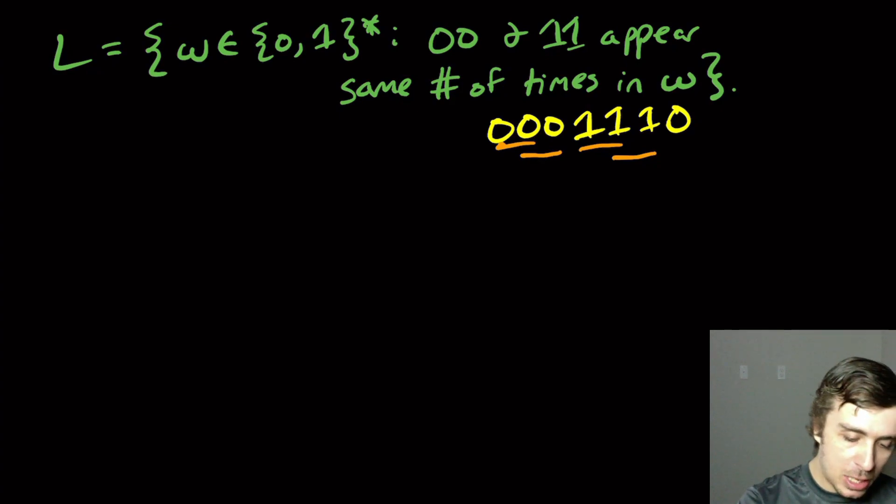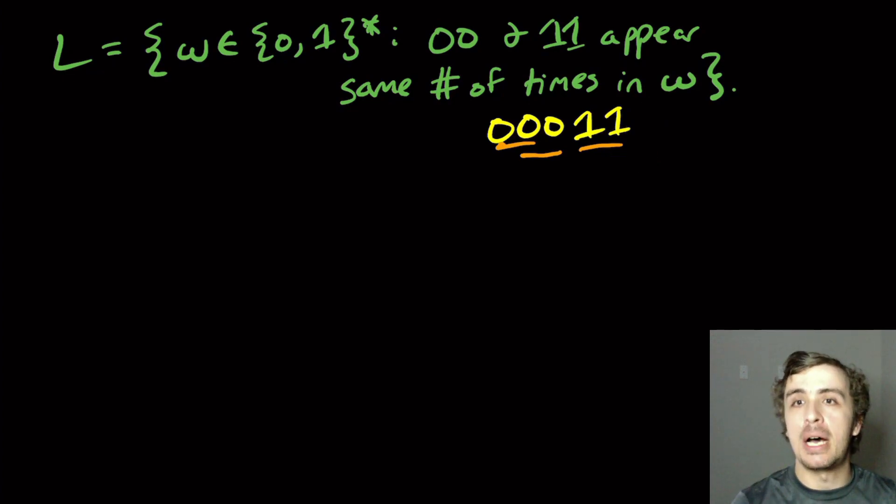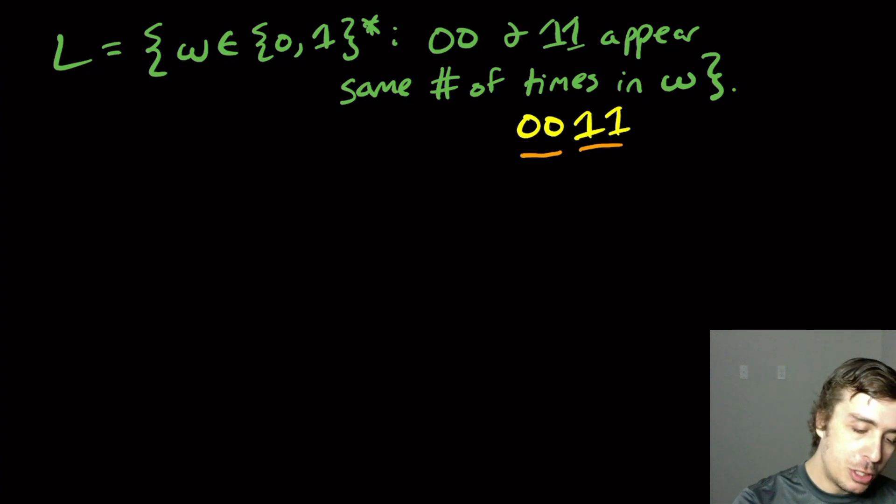If we took off that zero on the end, that doesn't change anything. However, if we took off this one right here, then it's not in the language anymore. If we deleted the first zero, then it's back in the language.